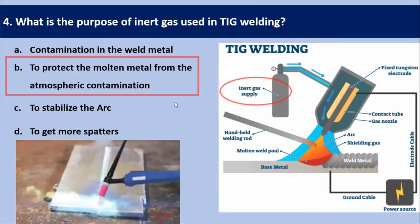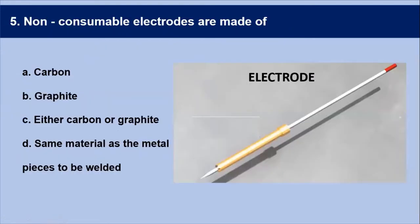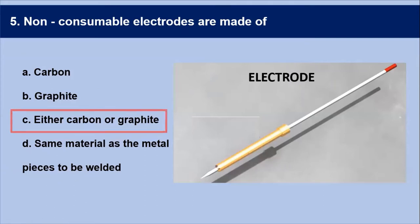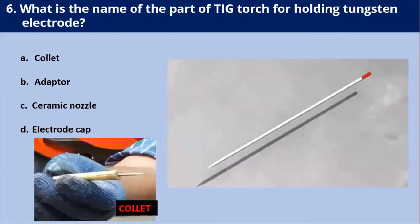Next question: non-consumable electrodes are made up of what? Non-consumable electrodes are those that do not get consumed as the welding operation proceeds. These electrodes are primarily made of either carbon or graphite materials. Tungsten can also be used, but since tungsten is not among the given options, the answer is: non-consumable electrodes are made of either carbon or graphite.